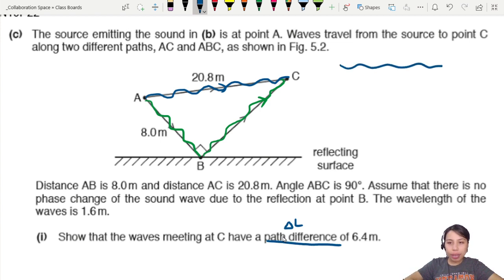Distances and angles are given. Assuming there's no phase change due to reflection at B, wavelength is 1.6. So show that the waves meeting at C have a path difference of 6.4. If we line up both of these waves, we'll see that actually the green one travels a much larger distance, and we need to find what is the path difference in length. So that could be somewhere from here to here, I suppose. Path difference.